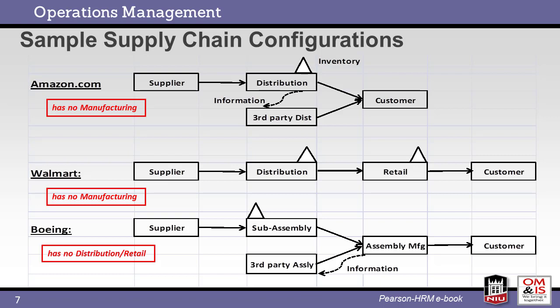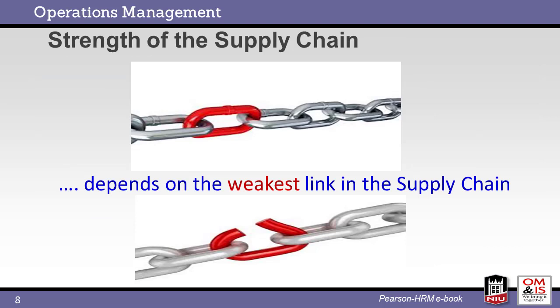This slide shows supply chain configurations for Amazon, Walmart, and Boeing. Note the similarities and differences. Amazon and Walmart supply chains do not include manufacturing, while Boeing ships direct to customer without a distribution segment. All members of the supply chain must be in alignment and balanced. If anyone fails to meet the needs of the customer, the entire supply chain will be affected.